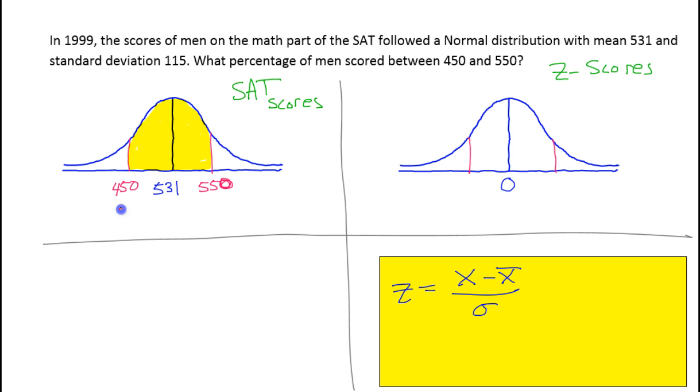So the first SAT score, 450. If I want to find the z-score for that, I'll call it z1. That's going to be 450 minus the mean, 531, divided by the standard deviation, which was 115. So you can just put that in your calculator. And that rounds to negative 0.70. We want two decimal places here. Very important, two decimal places. Even if it's a zero, keep it.